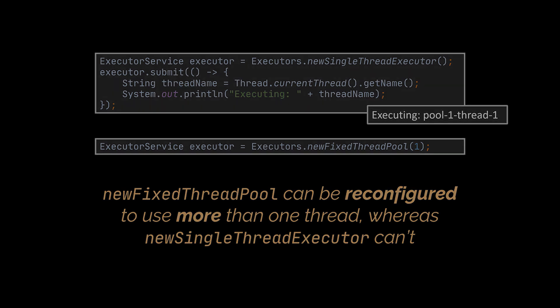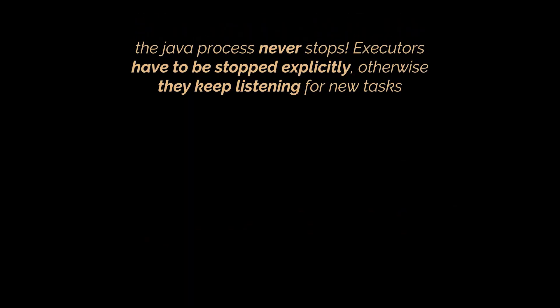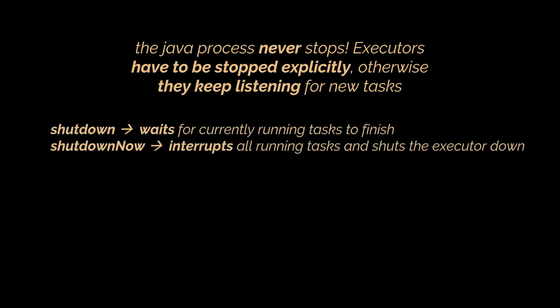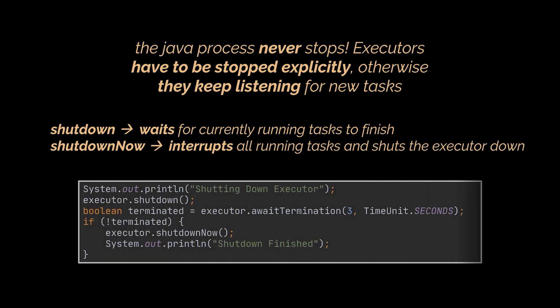When running the code you'll notice an important difference — the Java process never stops. Executors have to be stopped explicitly, otherwise they keep listening for new tasks. An ExecutorService provides two methods for that: shutdown waits for currently running tasks to finish, while shutdownNow interrupts all running tasks and shuts the executor down immediately. The preferred way is to shut down softly by waiting a certain amount of time, after which the executor shuts down by interrupting all running tasks.